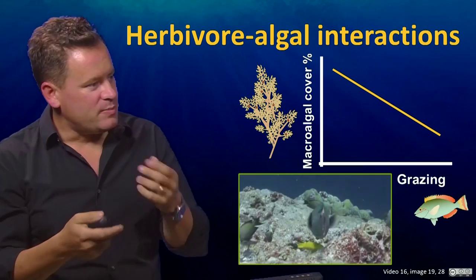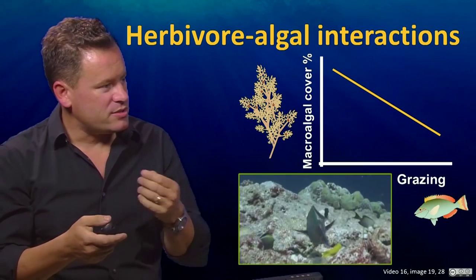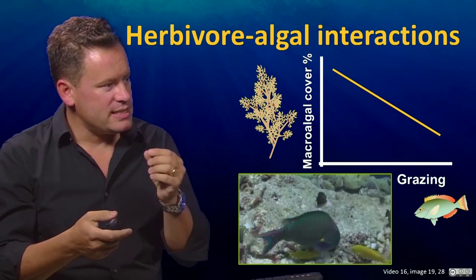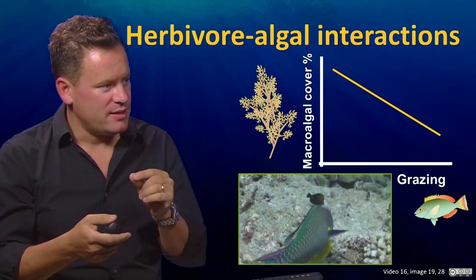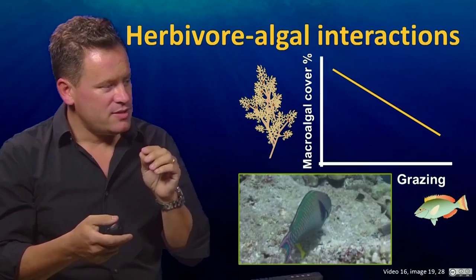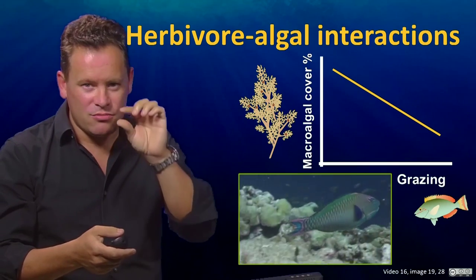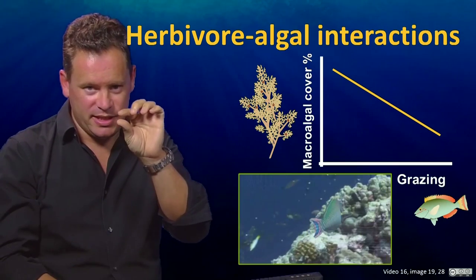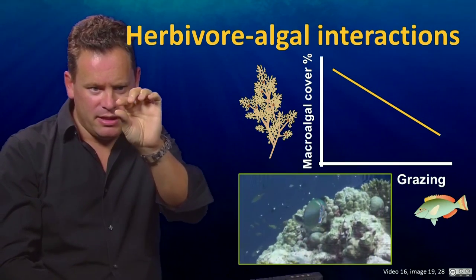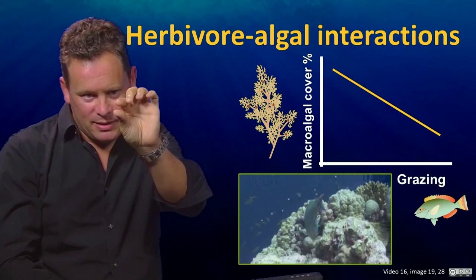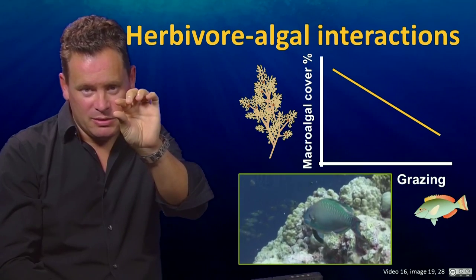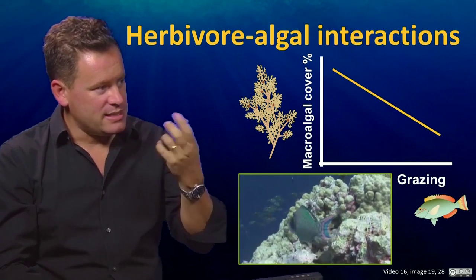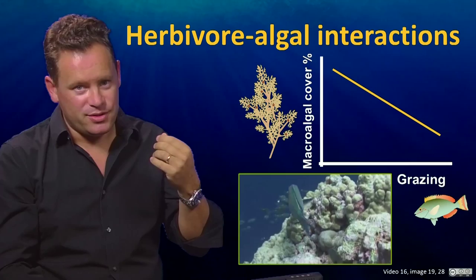What we're looking at here is a parrotfish that's cruising around the reef. I need to distinguish two types of algae. First of all, there's the little turfs — a range of different algal species that it's feeding on — and they only ever get to about two or three millimetres in height. That's its main food source.